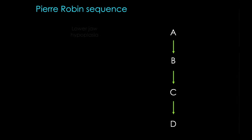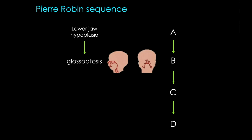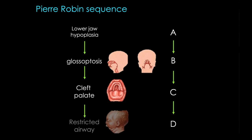Pierre Robin sequence starts with a single defect of lower jaw hypoplasia — that's A — which leads to a misplaced tongue, B, which fails to move out of the way during palate development, giving rise to cleft palate. The cleft palate can then lead to a restricted airway. So again, ordered consequences.